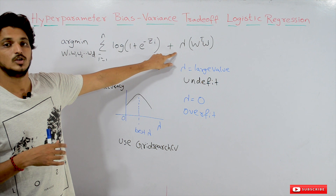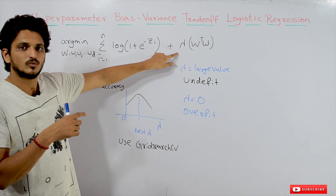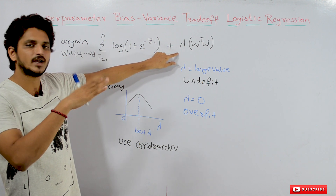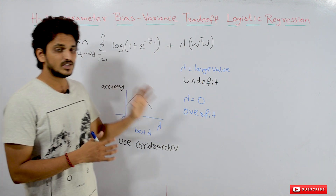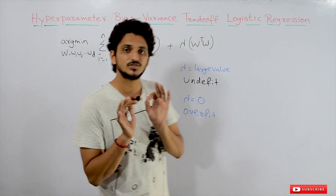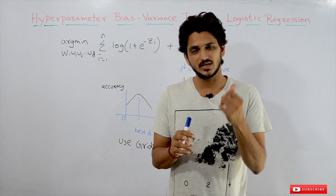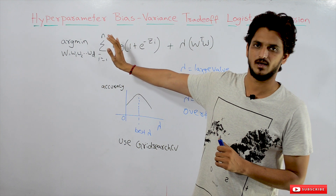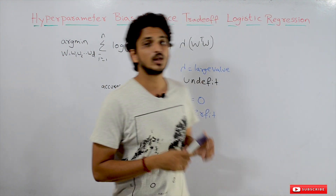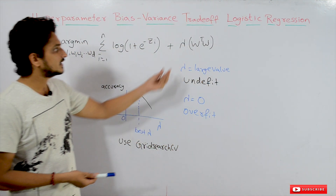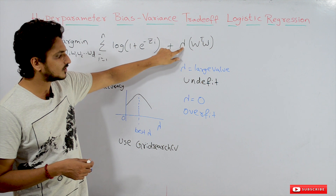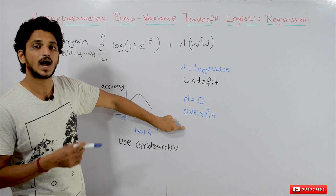We will understand in this class why lambda is the hyperparameter and how to take the trade-off between over-fitted and under-fitted models. From our previous class, if we don't have a regularization term, our model may lead to overfitting. When lambda is equal to 0, we don't have the regularization term, so lambda equal to 0 means an over-fitted model — a high variance model.